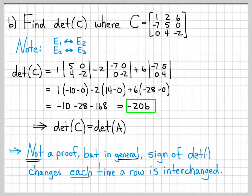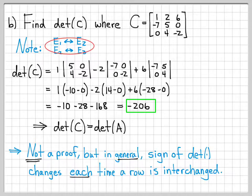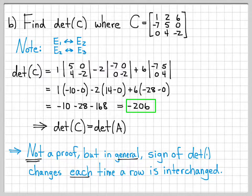Now that we know this property, computing the determinant of C is pretty trivial — we don't really need to use the definition. We just take the original determinant, negative 206, and multiply by negative one raised to the number of row changes. Negative one to the two is one, and one times negative 206 is negative 206. So this is often a much simpler way to compute the determinant of a matrix if you know the determinant of the starting matrix A.